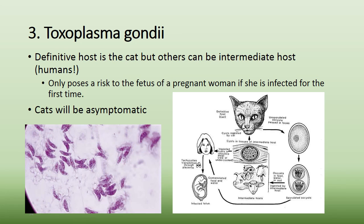Toxoplasma's definitive host is the cat, but other animals and humans can be accidental hosts. It only poses a risk to the fetus of a pregnant woman if she is infected for the first time; prior exposure confers resistance. First-time infection during pregnancy can cause major fetal defects. It is transmitted through cat feces — which is why pregnant women are advised not to change litter boxes. Toxoplasma can also be found encysted in undercooked meat from farm animals.